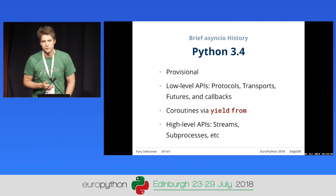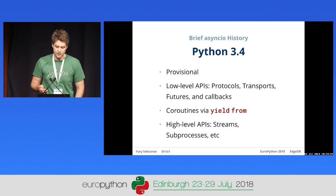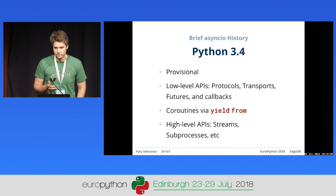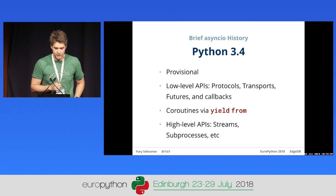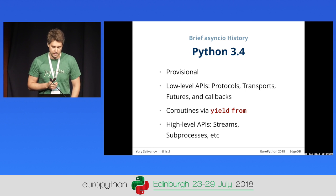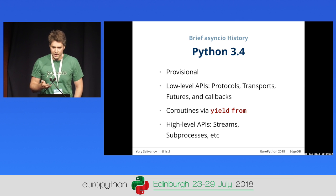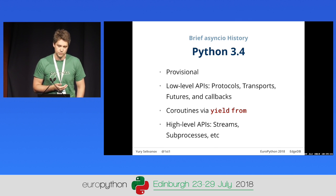AsyncIO was focused on mostly low-level APIs. We recreated a lot of stuff from Twisted — we had protocols, transports, and futures, which are basically deferred Twisted objects with some modifications. It also had coroutines via the yield-from syntax, which was a novel idea back then. It also had some high-level APIs, like streams and subprocesses, that were supposed to work with yield-from coroutines.